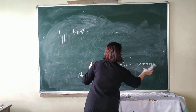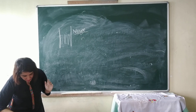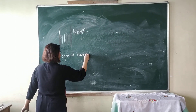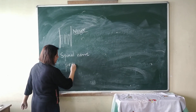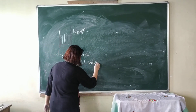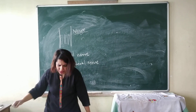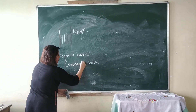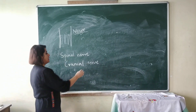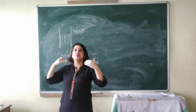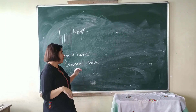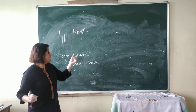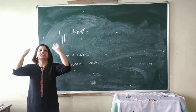Based on their origin, there are two types of nerves: spinal nerves and cranial nerves. Spinal nerves are nerves which originate below your neck. Cranial nerves are nerves which arise from your brain, or which arise above your neck.